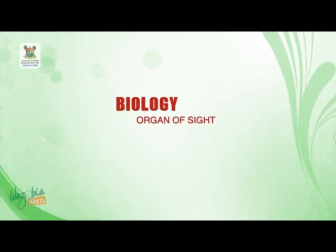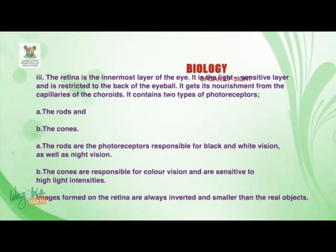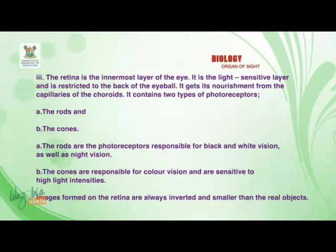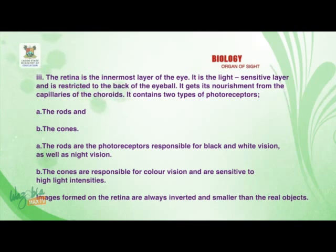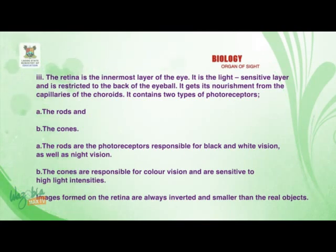Welcome back. We are talking about the retina, which is the innermost layer of the eye. It is the light-sensitive layer and is restricted to the back of the eyeball. It gets its nourishment from the capillaries of the choroid. It contains two types of photoreceptors: the rods and the cones. The rods are the photoreceptors responsible for black and white vision as well as night vision.